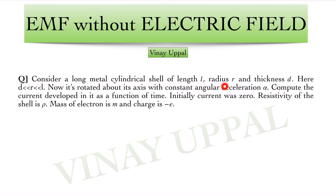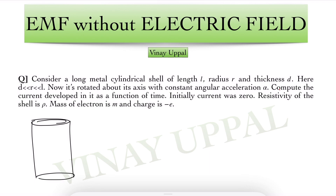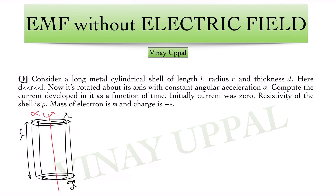Consider a long metal cylindrical shell of length L, radius R, and thickness D, where D is much less than R, which is much less than L. It is rotated about its axis with a constant angular acceleration alpha. So let me first draw the diagram. We have a long cylindrical shell of radius R, length L, and small thickness D, rotated about its axis with constant angular acceleration alpha. We need to compute the current developed in it as a function of time. Initially the current was zero, resistivity of the shell is given, mass of the electron is M, and charge is minus e.